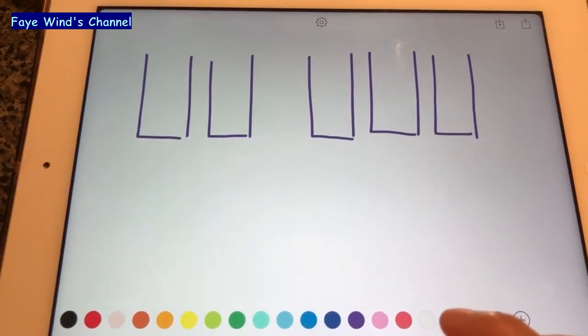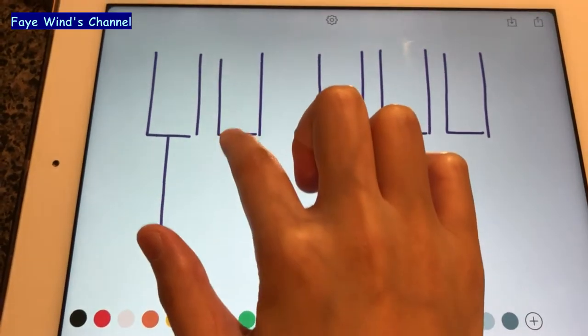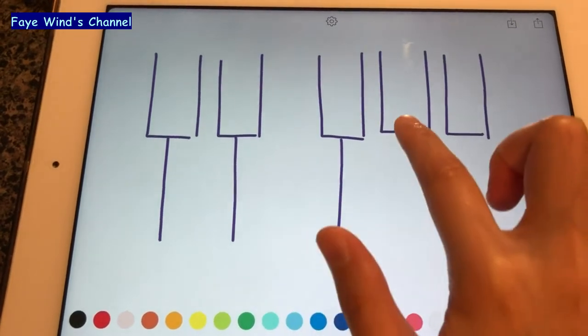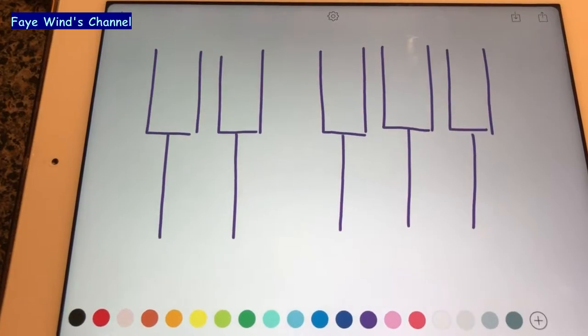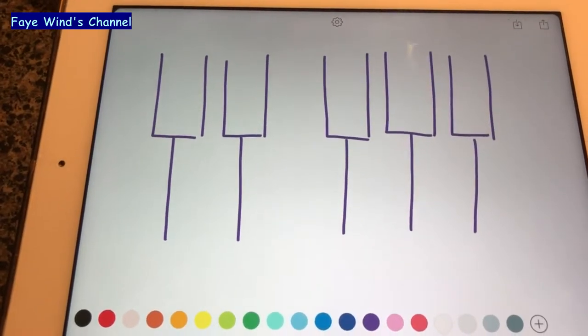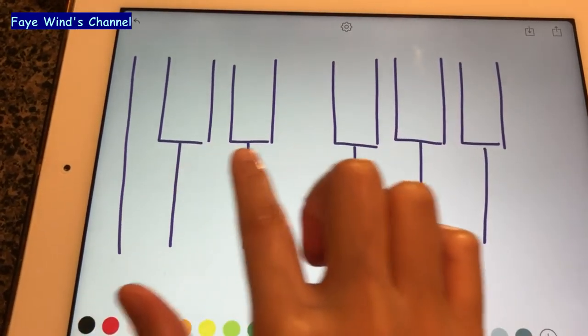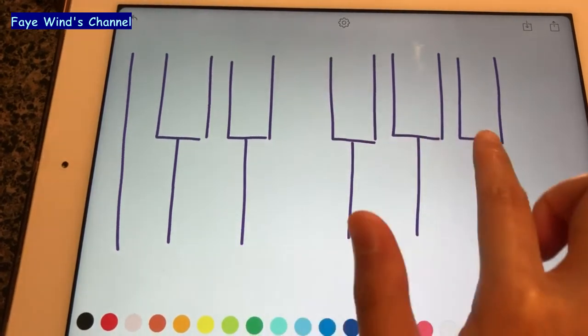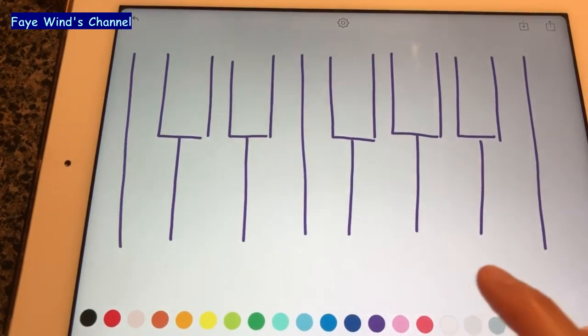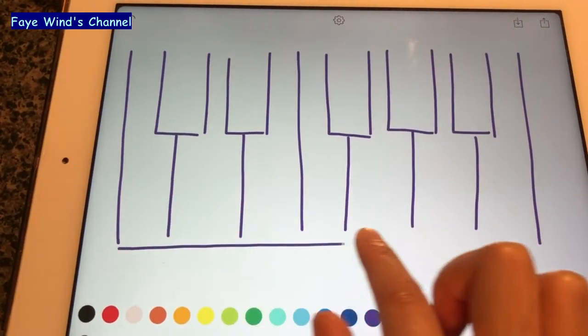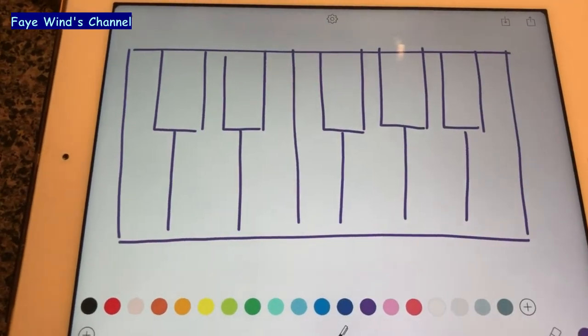In between each black key, draw a line. And to finish this off, draw a very long line at the front. And there's another long line in between the two black keys and the three black keys. And another one at the very end. And I always like to seal off the bottom and the top. And that's what a keyboard looks like.